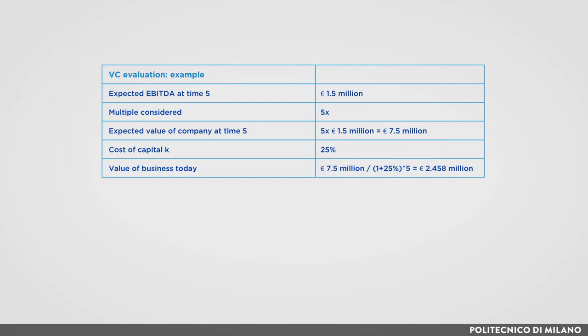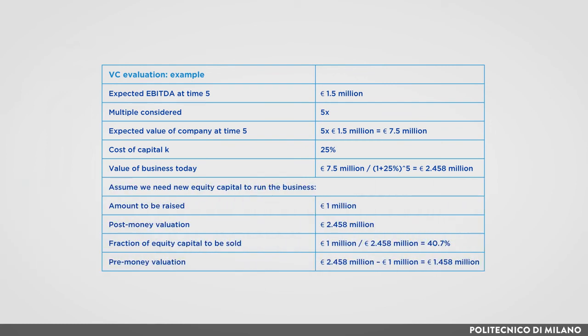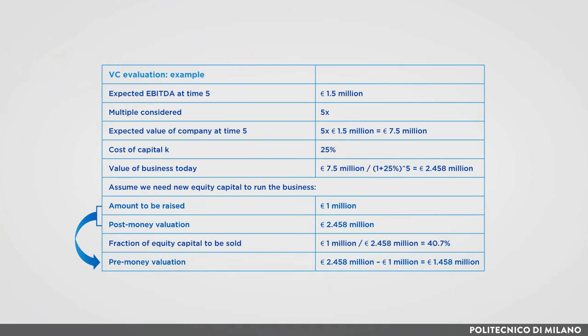Now, assume that the company needs 1 million euro cash to survive. The question is: what is the percentage of equity capital to be sold to an outside investor in exchange for the money? A simple proportion tells us that we should propose 40.7% of the equity capital. The value of 2.458 million euro is called the post-money valuation of the business, because it is the value of the company conditional on collecting the cash in the equity round. The difference between the post-money valuation and the amount raised is the pre-money valuation. Surely, the evaluation depends on some relevant assumptions, and changes in assumptions will lead to a different value. It is therefore recommended to perform a sensitivity analysis to check the robustness of the results.